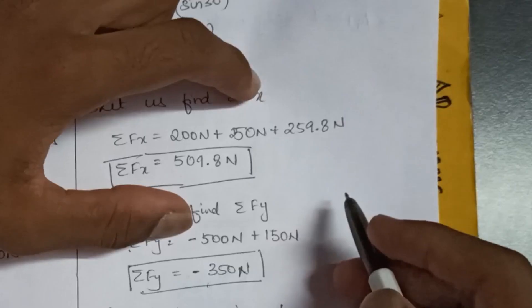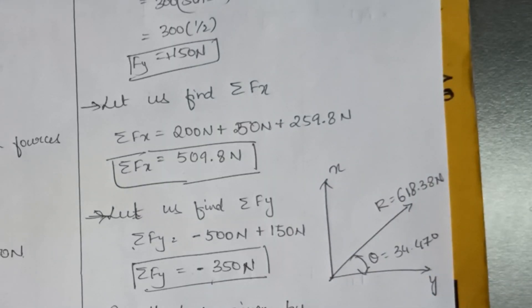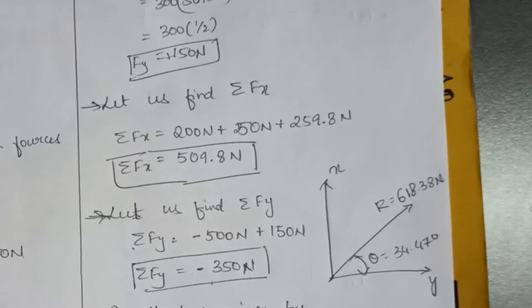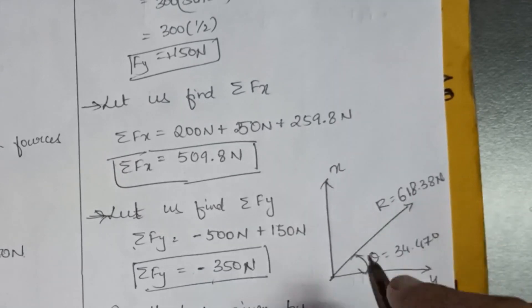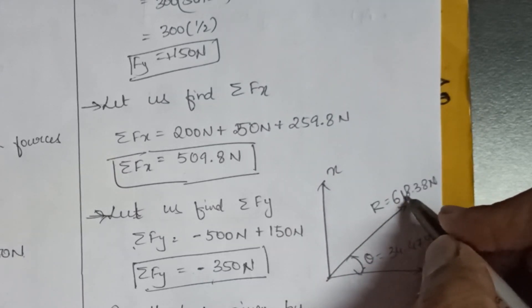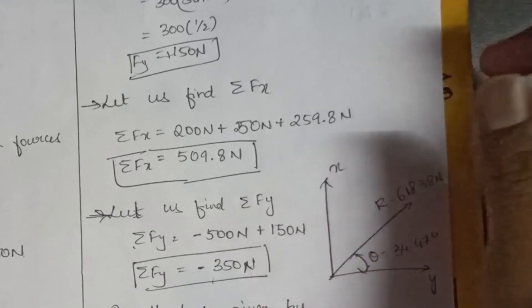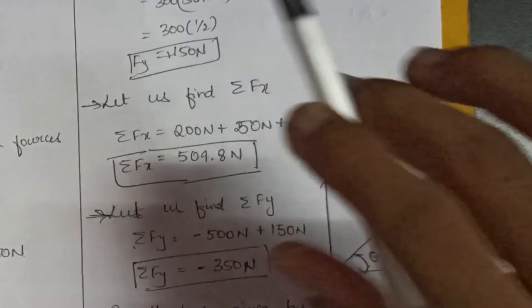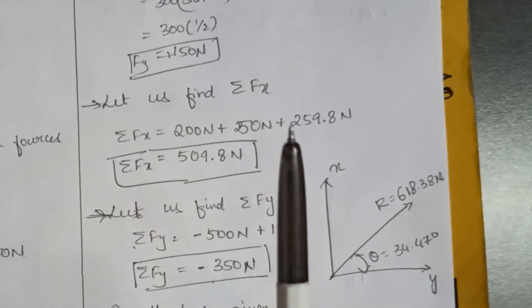Represent the result in the XY plane. Since ΣFx is positive and ΣFy is negative, the resultant lies in the fourth quadrant. The final answer: the resultant is 618.38 N inclined at θ = 34.47 degrees. This is where we end today's session. Subscribe to this channel, comment if you have any doubts, and check out the link in the description. Take it easy, engineers — see you in the next video!